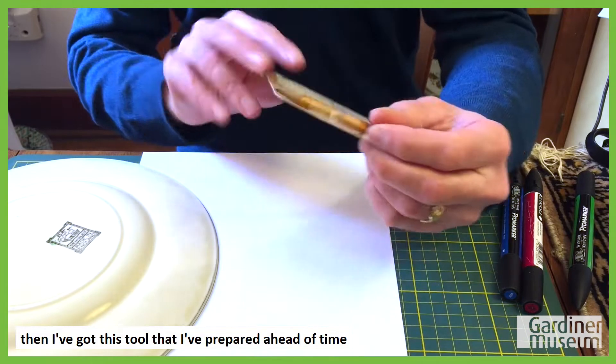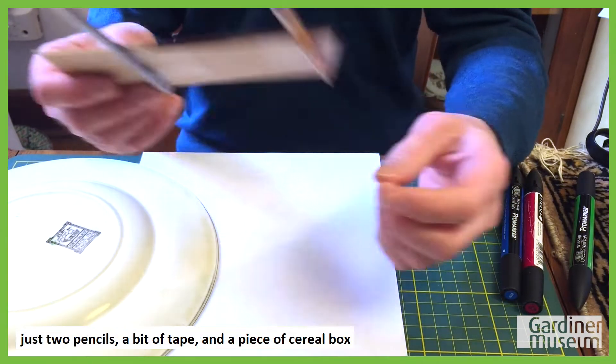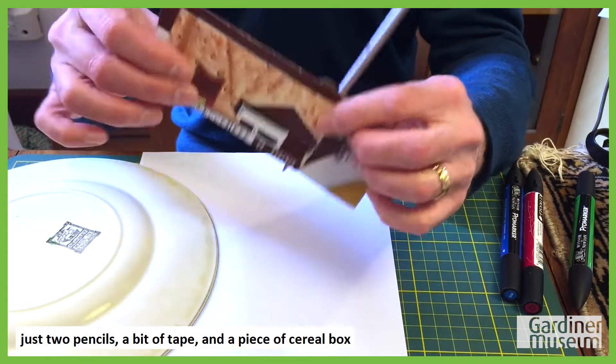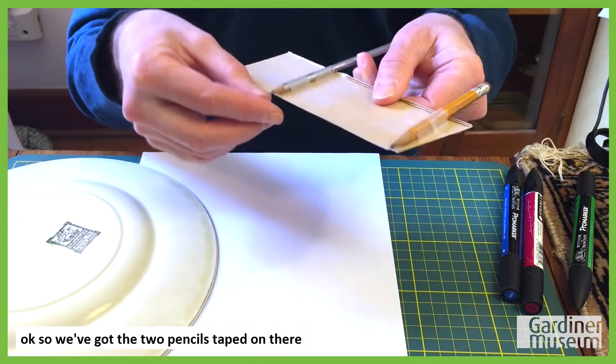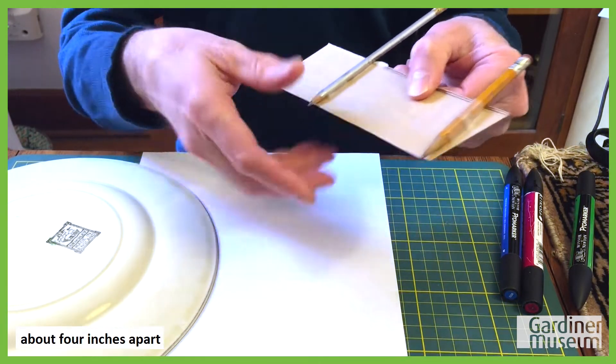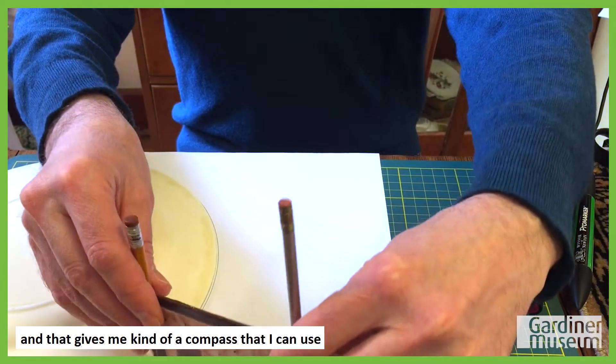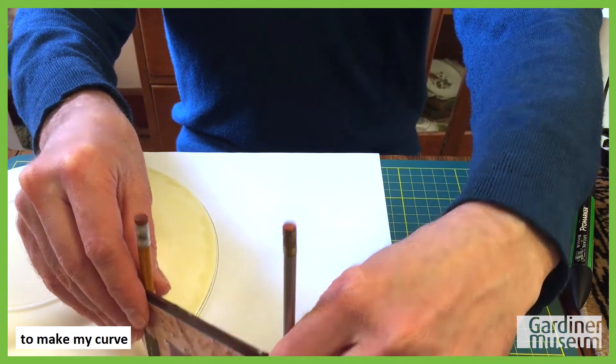Then I've got this tool that I prepared ahead of time, just two pencils, a bit of tape, and a piece of cereal box. I've got the two pencils taped on there, about four inches apart. And that gives me a kind of a compass that I can use to make my curve.